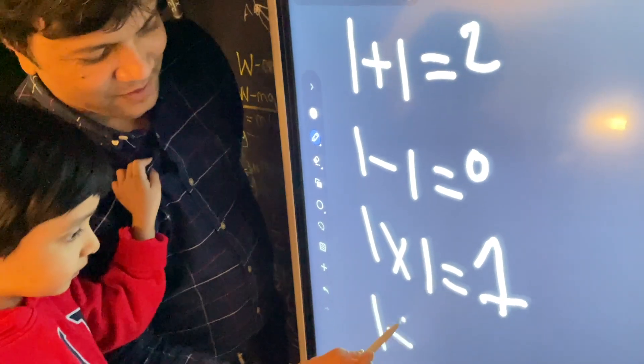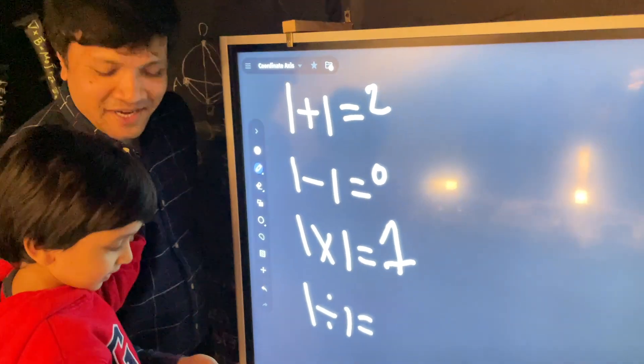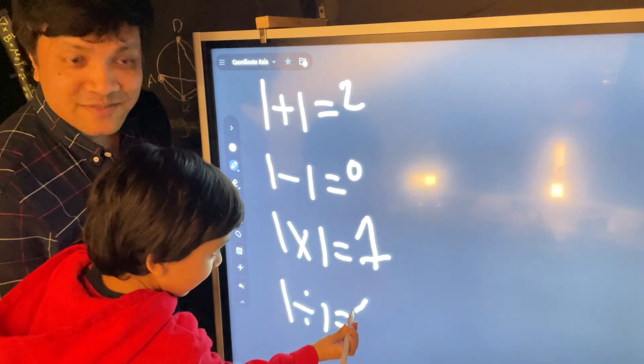Now, the last one. One divided by one. Can you tell me what is one divided by one? One. That's excellent. Wow. 100 over 100. This fellow is smarter than me.